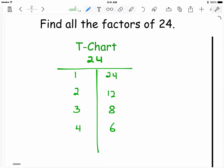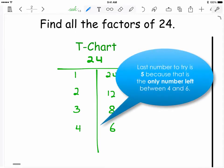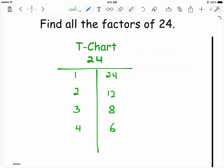The only number that we need to try out at this point is 5, because that is the only number left in between 4 and 6. Since 5 does not go into 24, we are done, because the number after 5 is 6, which is already discovered when we did 4 times 6. Notice how the numbers go from smallest to largest from the left column to the right column. This is something that you should look for as you sort and organize your factors.